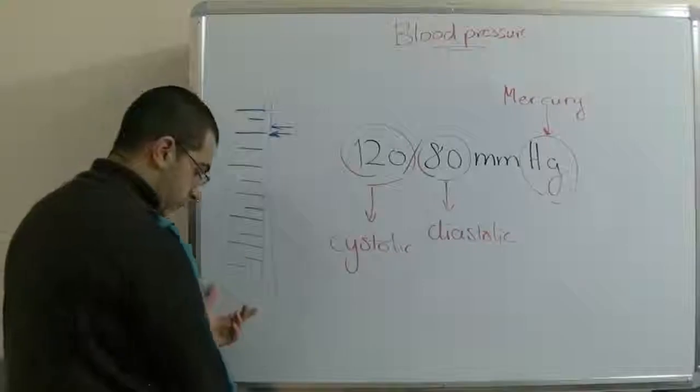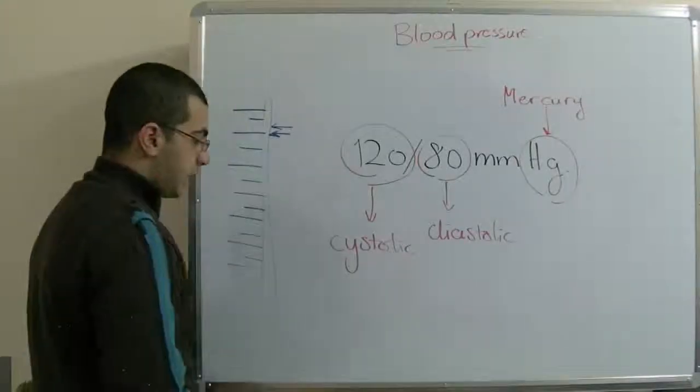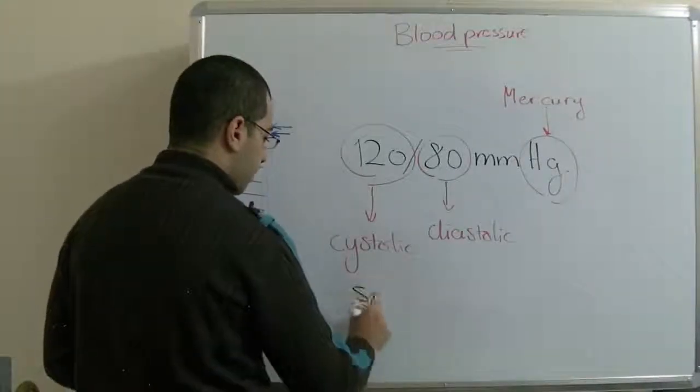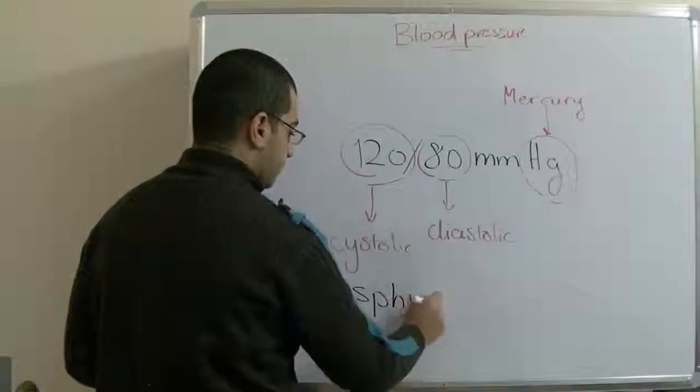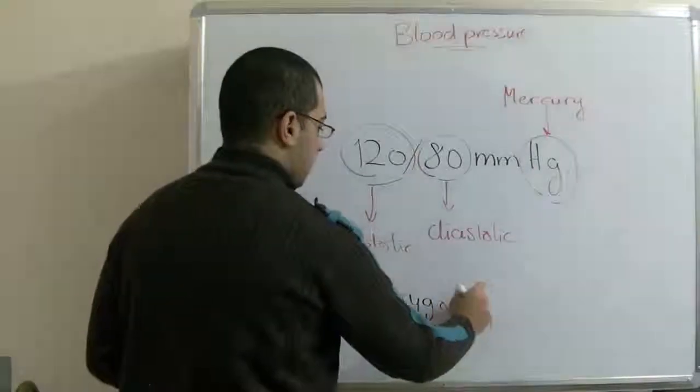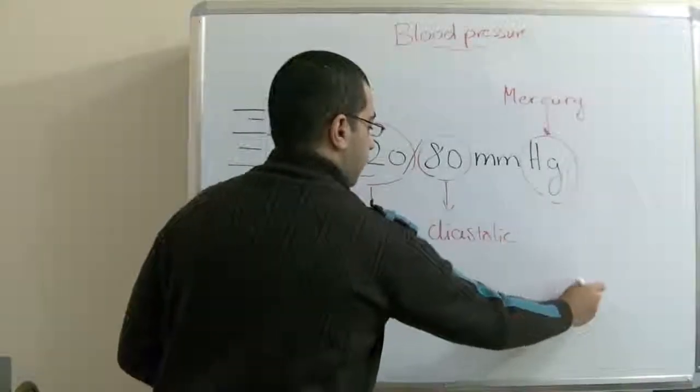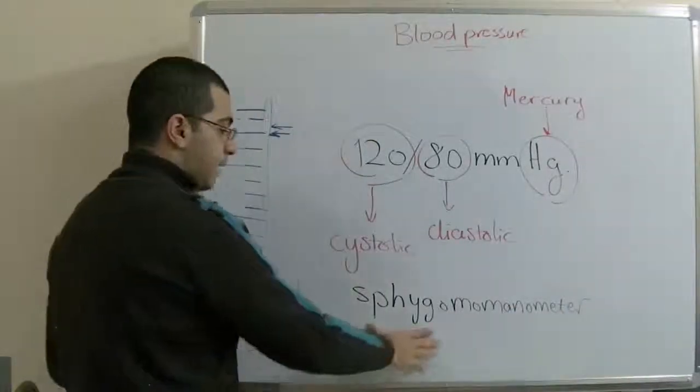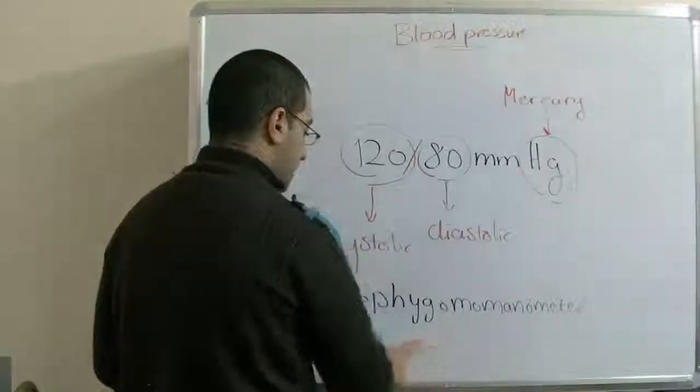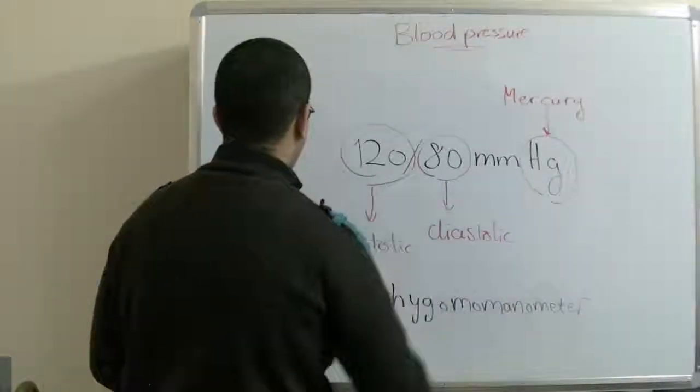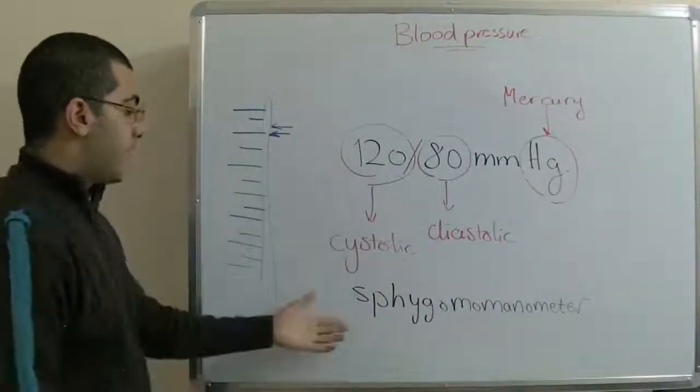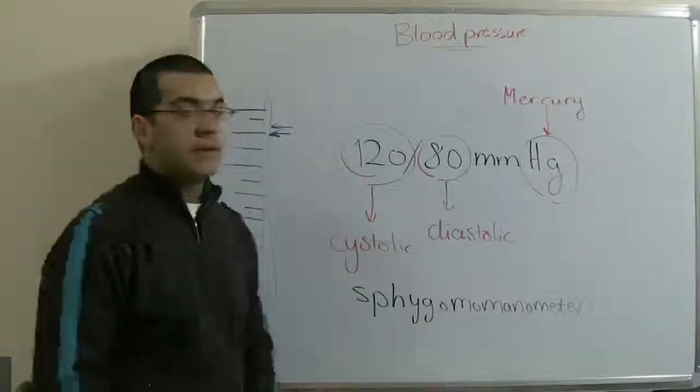By the mercury instruments. This instrument is called the sphygmomanometer. This is a device used to measure the blood pressure.